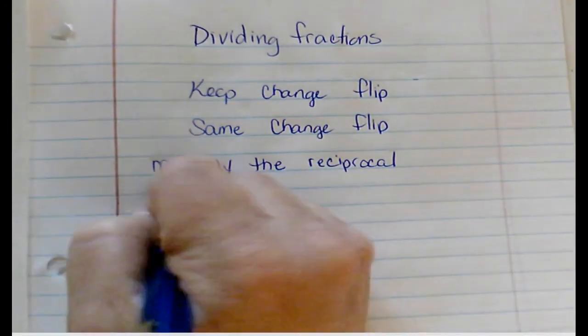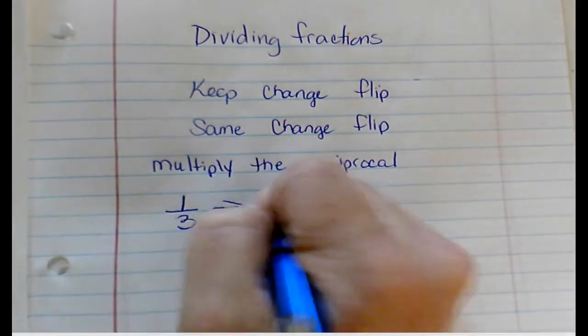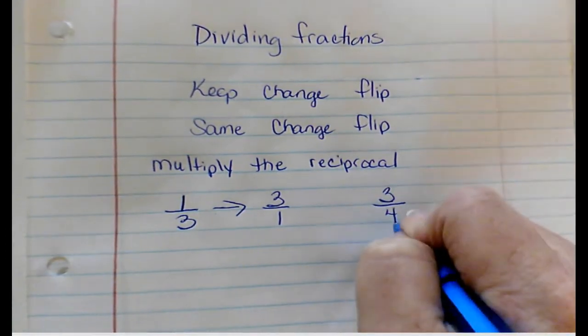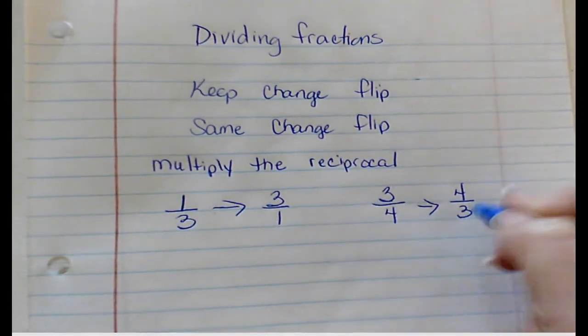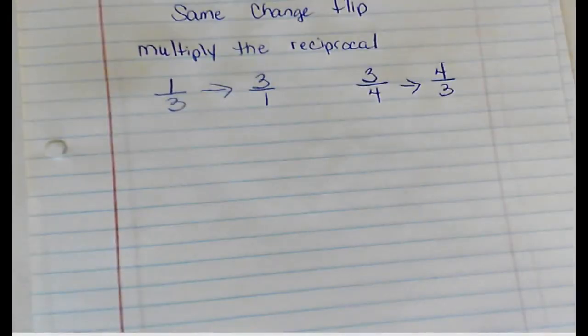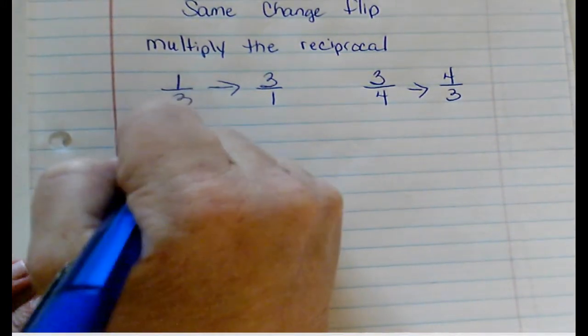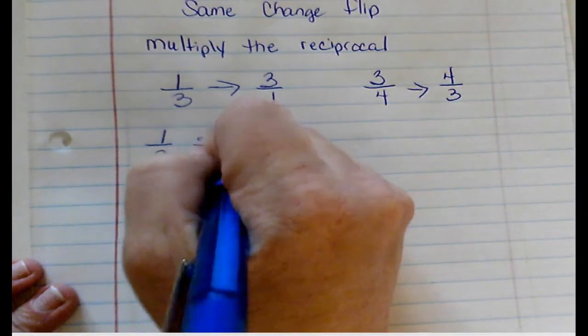For example, the reciprocal of 1/3 would be 3 over 1. The reciprocal of 3/4 would be 4 over 3. You are just flipping it. So let's practice some problems. 1/3 divided by 1/2.